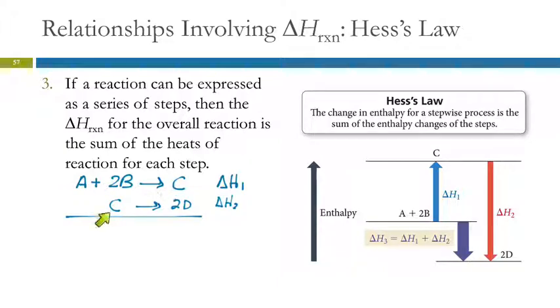Well if I add these two reactions together, like we did with the half reaction method, this is making C and then the C gets decomposed. We can think of that as canceling out, right? So we add those together, A plus 2B makes 2D, and ΔH for this is going to equal ΔH1 plus ΔH2.